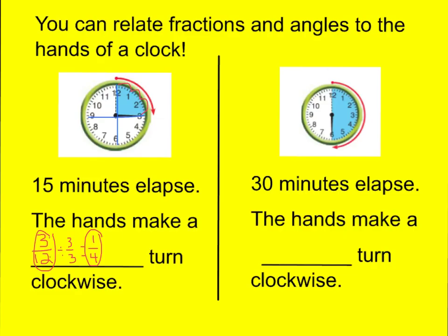Now let's look at the second clock where 30 minutes of time has elapsed. The hands are going in a clockwise direction. I know that 30 minutes is the same as six-twelfths. Six-twelfths simplifies to one-half because 6 divided by 6 is 1 and 12 divided by 6 is 2. Looking at the clock, one-half is shaded in — the hands made a one-half turn clockwise.